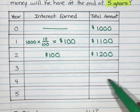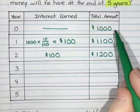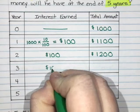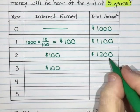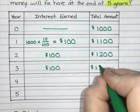So another year rolls around, we hit the end of year three, he gets 10% of $1,000 again, which is still $100. So he gets another $100. So 1,200 plus $100 gives me $1,300.